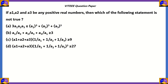Now let's look at the second question. If a1, a2, and a3 are any positive real numbers, which of the following statements is NOT true? (a) 3·a1·a2·a3 is less than a1³+a2³+a3³; (b) a1/a2 + a2/a3 + a3/a1 is greater than or equal to 3; (c) (a1+a2+a3)(1/a1+1/a2+1/a3) equals 9; (d) (a1+a2+a3) times (1/a1+1/a2+1/a3) cubed is greater than or equal to 27.